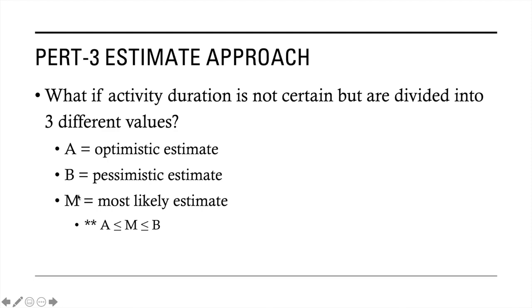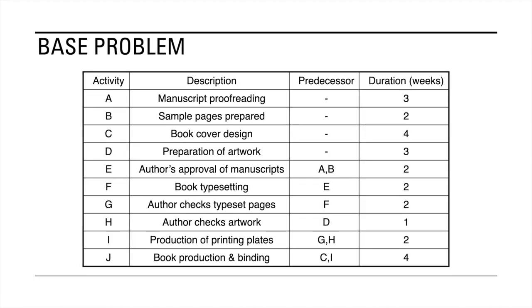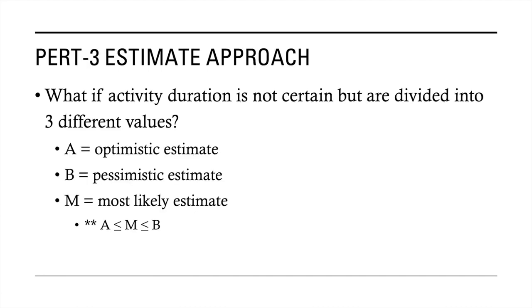So if we were to use this example, most probably this duration can be our most likely duration or estimate. Therefore, all you have to do is ask your supplier: is there an optimistic estimate? Is there a chance that they will be able to deliver it or do the activity faster? Or is there also a chance that they will be able to do the activity for a much longer duration?